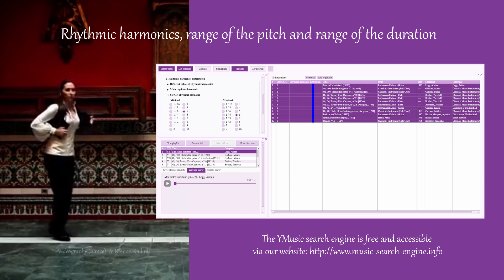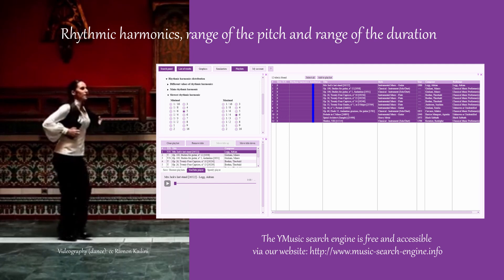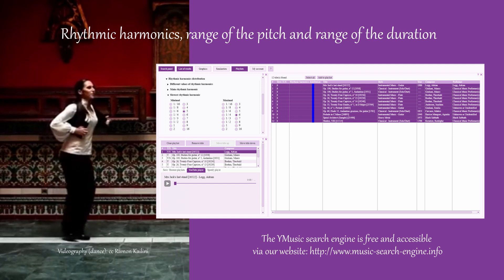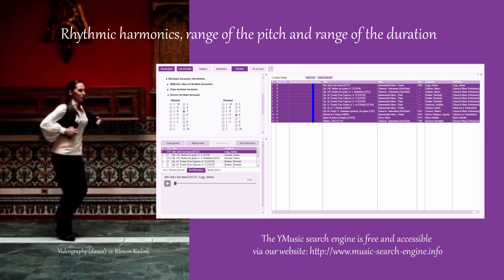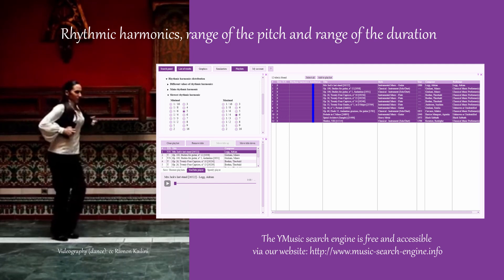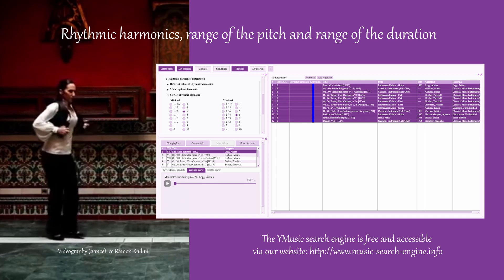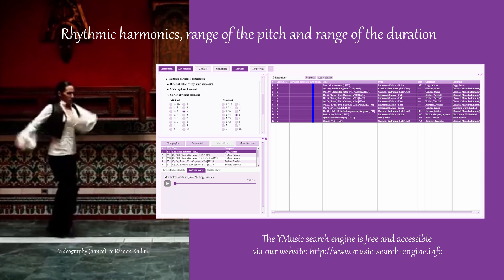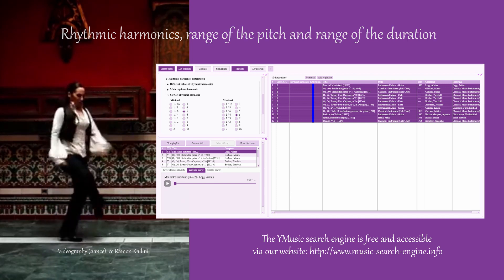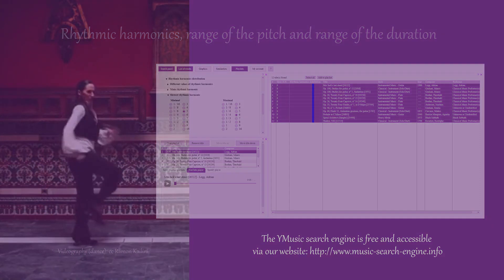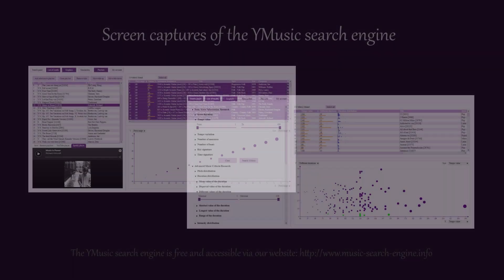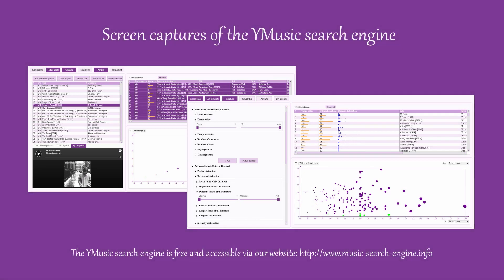We can do a similar research for the parameter Fastest Rhythmic Harmonic, and also for any unique rhythmic harmonic, with the parameter Presence of Individual Rhythmic Harmonics.